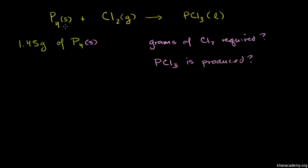We know that solid phosphorus will react with chlorine gas to spontaneously produce phosphorous trichloride, liquid phosphorous trichloride. We're told that we have 1.45 grams of solid molecular phosphorus, and we're asked how many grams of chlorine is required to essentially use up all of the phosphorus that we have, and how many grams of phosphorous trichloride is going to be produced.